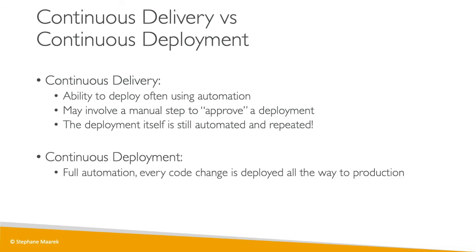Continuous deployment, on the other hand, is entire automation. Every code change you make in your source repository will be deployed all the way to production — there are no manual interventions or approvals. This is usually supported by heavy monitoring, and if there's a bug, you just push a new code fix to the repository and it makes its way all the way through to the end of the pipeline. Delivery may involve a manual step, whereas continuous deployment is automated all the way to production.